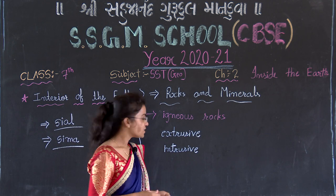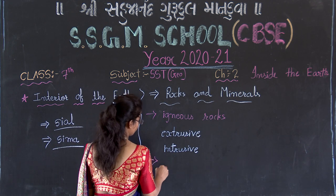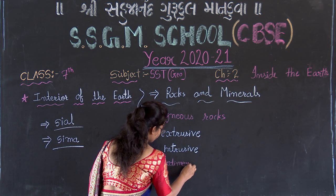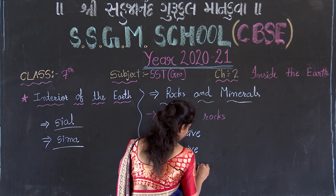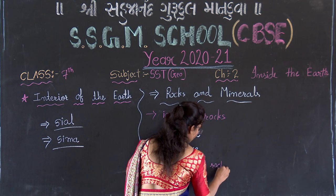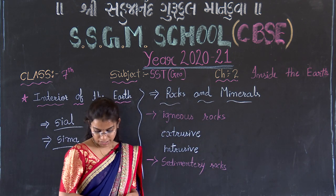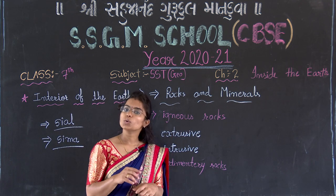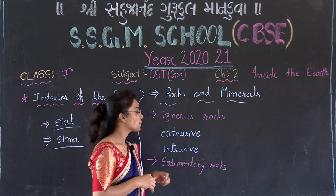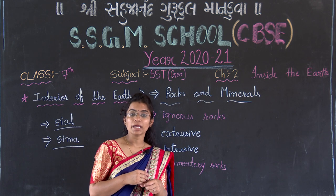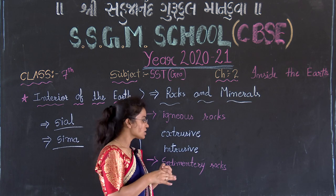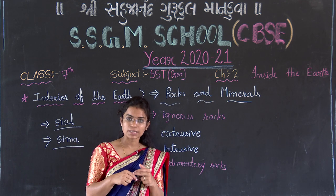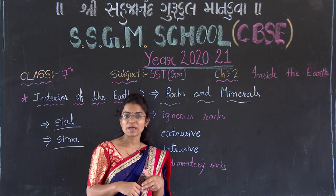The second type is sedimentary rocks. Sedimentary rocks are formed from igneous rocks. When wind or landslides occur, igneous rocks break down into smaller and smaller particles, and then these particles come together to form sedimentary rocks.